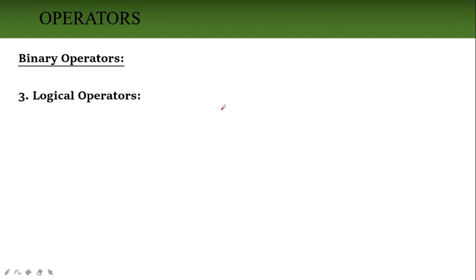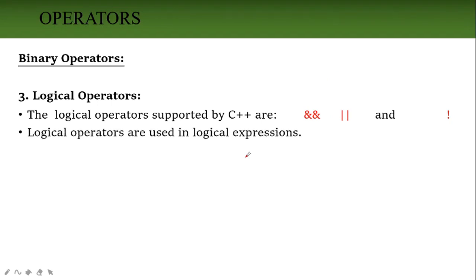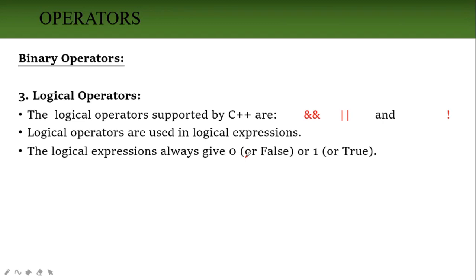Next, logical operators. Logical operators are used to perform logical operations. The logical operators are: AND (&&), NOT (!), and OR (||). These are used for compound operations. The result of logical operators is also true or false, that is 0 or 1.